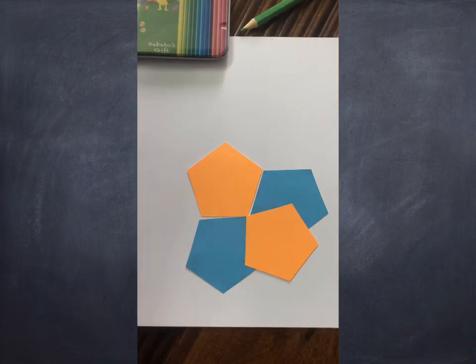Now let us see what happens when we try to place pentagons next to each other. As you can observe, by placing three pentagons, there is a gap between them. And if I try to fill this gap with a fourth pentagon, we can see that overlap occurs.